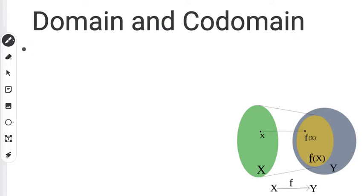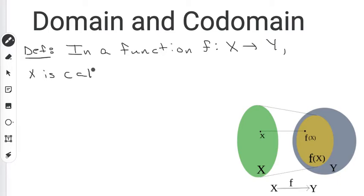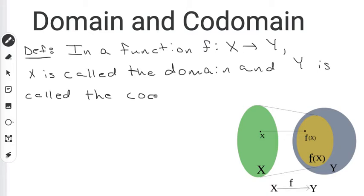So here's a definition to start off with. In a function f, which maps x to y, x is called the domain, and y is called the codomain.